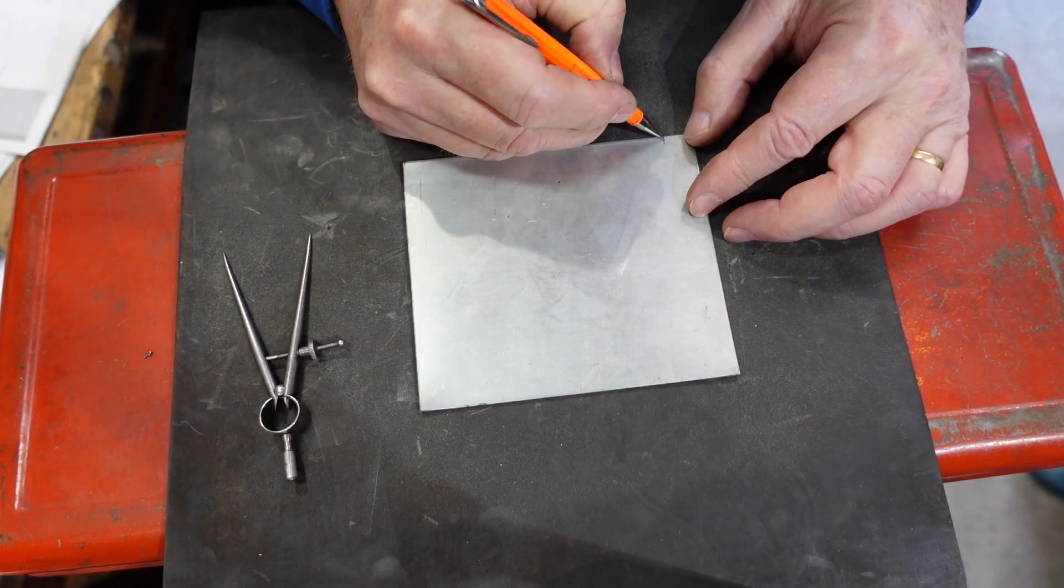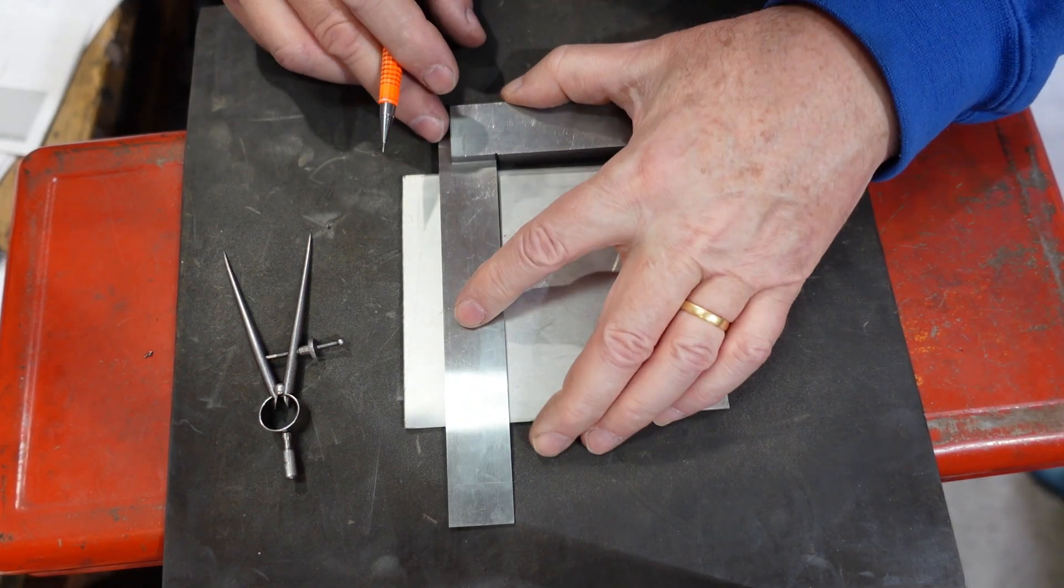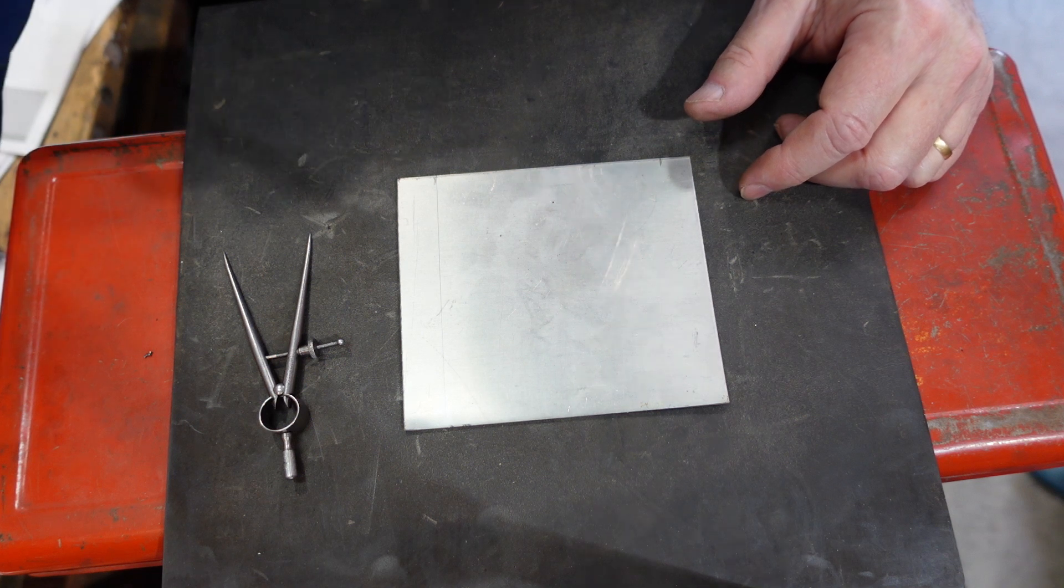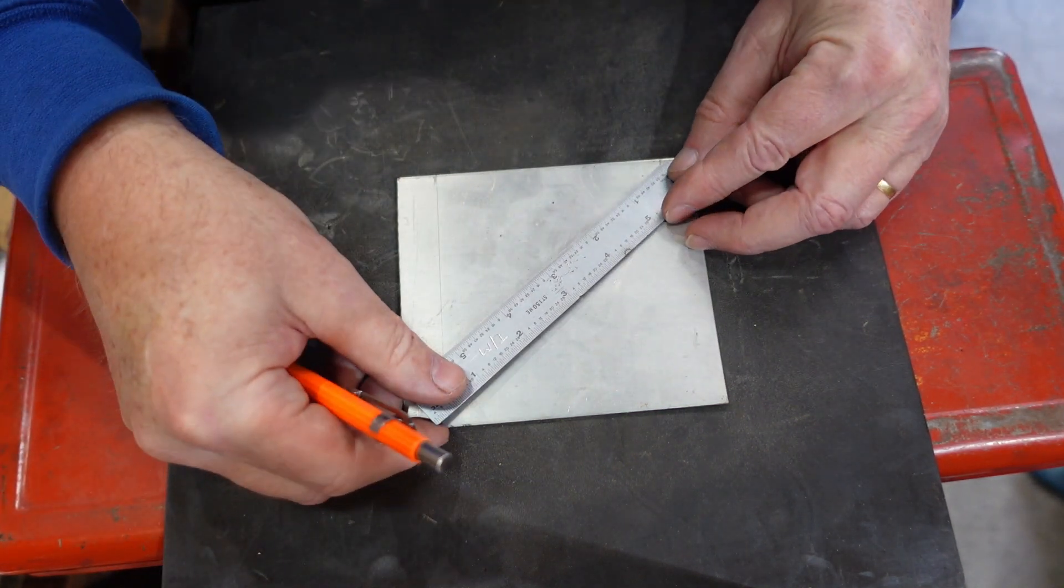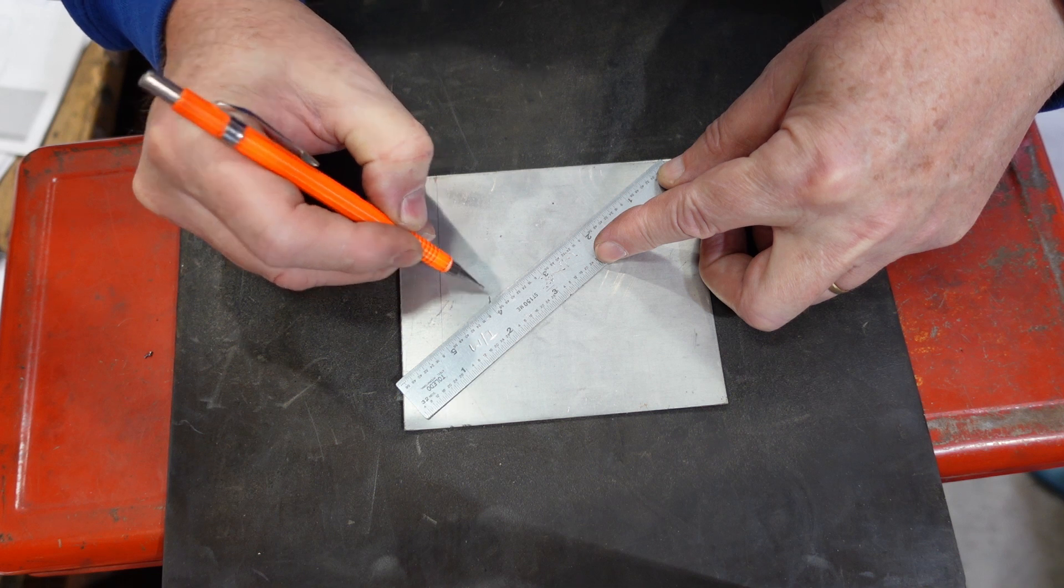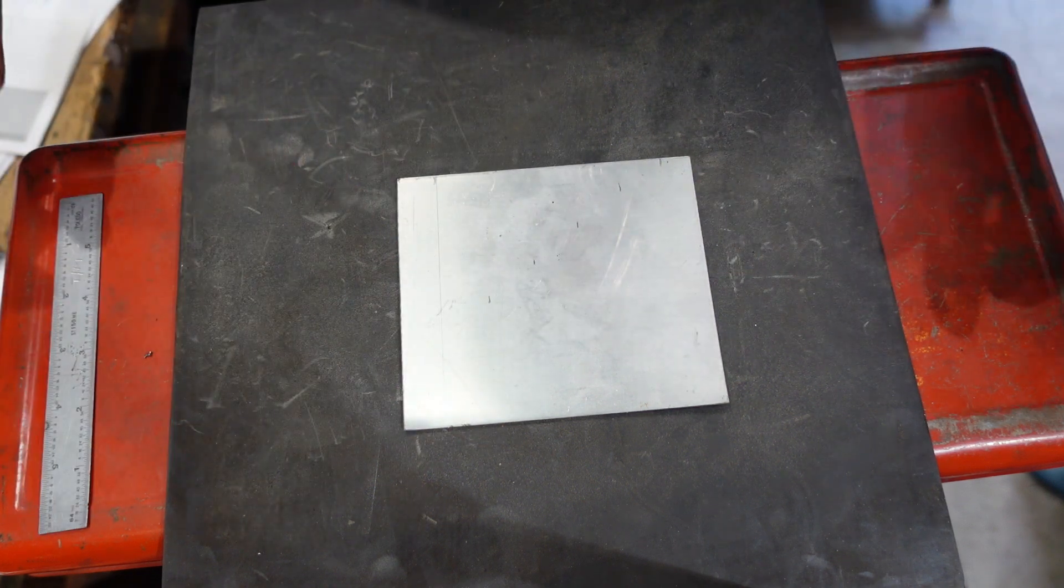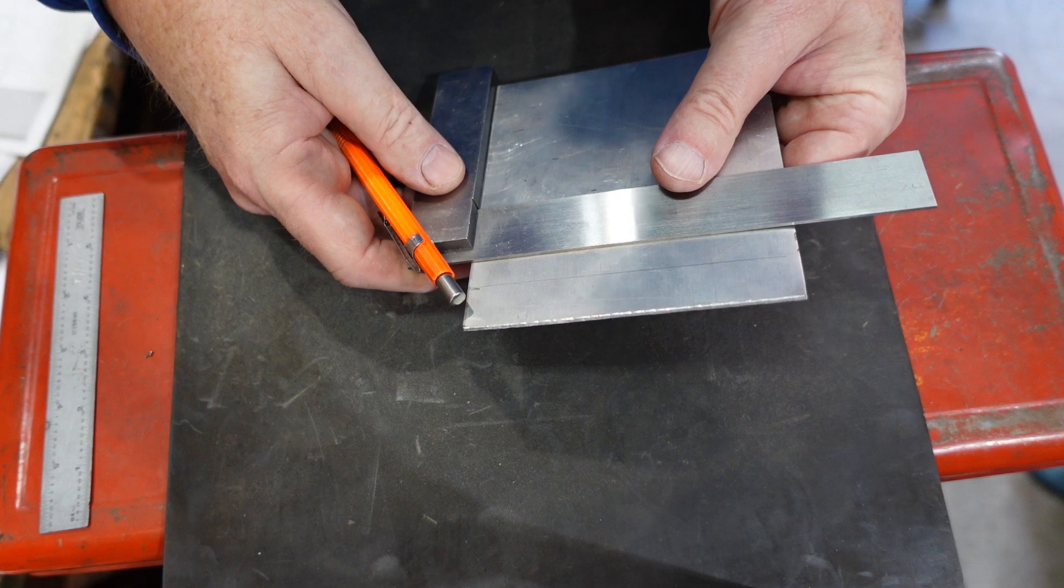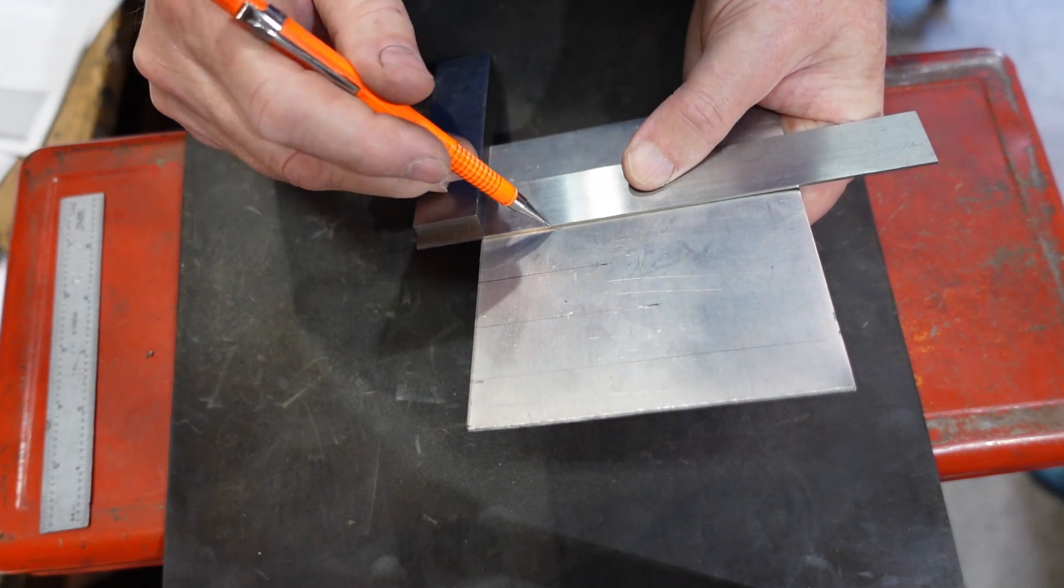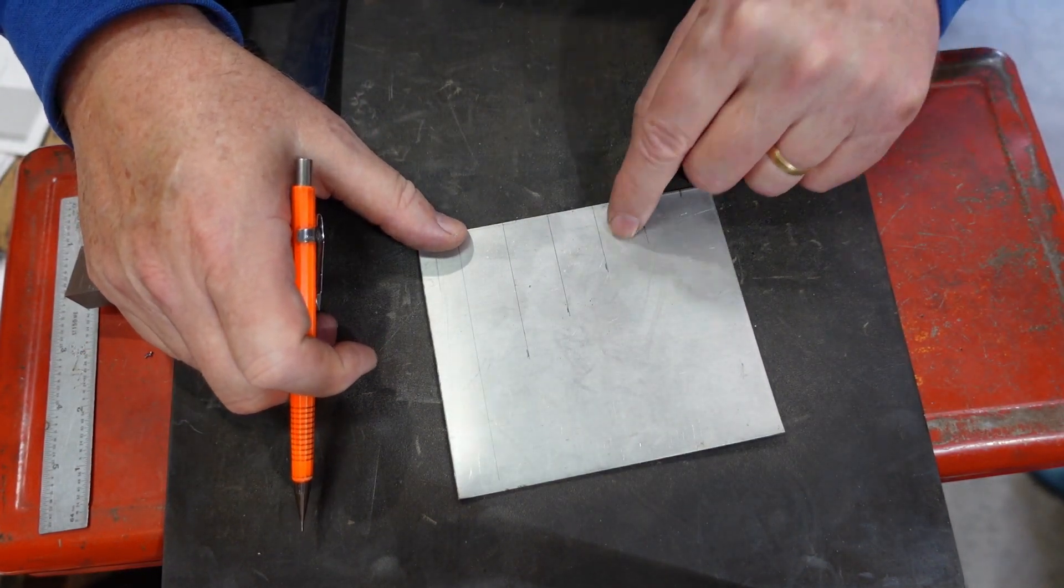Now suppose I had a line say from here to there which I wanted to divide into say five parts. What I can do is get my square out again, put a line up there, and then using my rule put one end on that mark there and get the five there on my vertical line. Then I can just come along with those marks, I can then come along with my square, and between there and there I'll have five equal divisions.